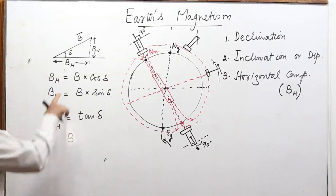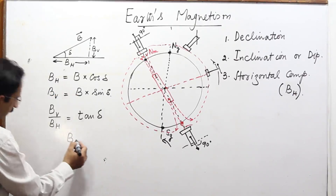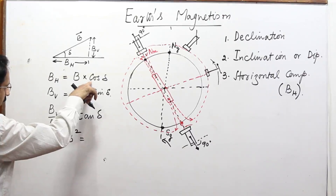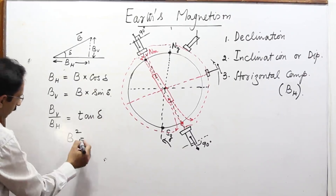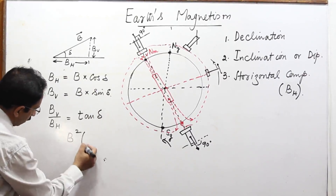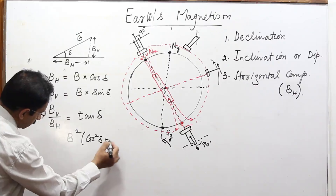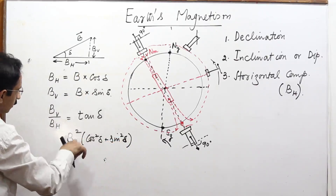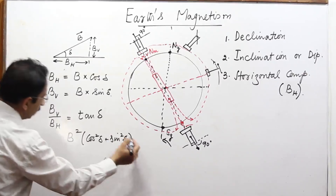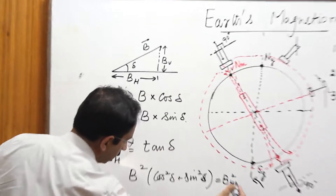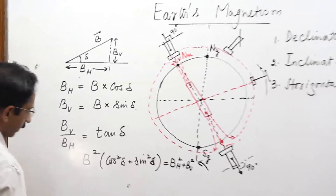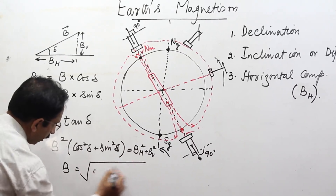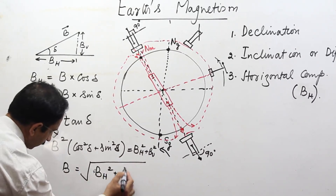We can also use another relation: adding the squares of both components, BH² + BV² = B²(cos²δ + sin²δ) = B², since cos²δ + sin²δ = 1. So the net magnetic field B equals the square root of BH² plus BV². This gives us the mathematical relationship between the three elements.